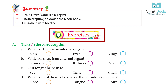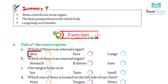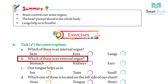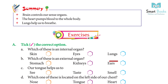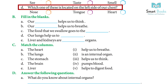Exercise. Take the correct option. A: Which of these is an internal organ? Skin, Eyes, Lungs. Answer: Lungs. B: Which of these is an external organ? Stomach, Kidneys, Ears. Answer: Ears. C: Our tongue helps us to — see, taste, smell. Answer: Taste.